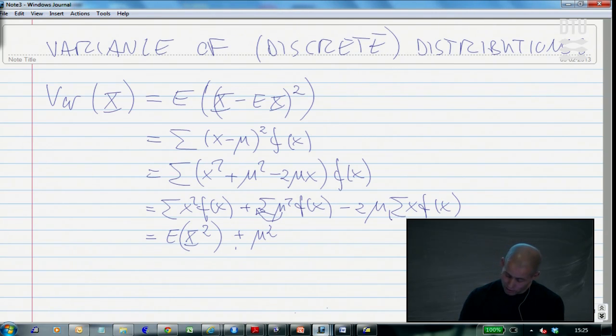And again here, this part becomes simply mu - that's the mean. So this is two mu squared altogether: E of x squared minus mu squared.